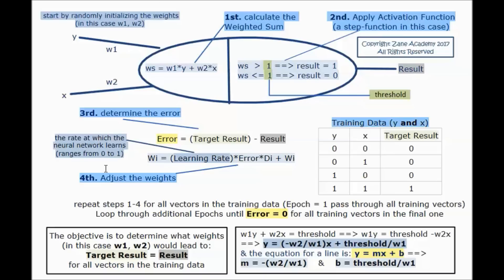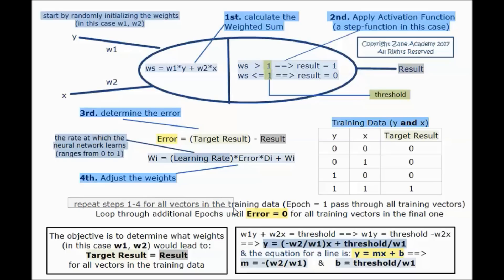Fourth, we adjust the weights: w1 = (learning rate * error * y) + original w1, and w2 = (learning rate * error * x) + original w2. We repeat steps 1 through 4 for all vectors in the training data — this constitutes one epoch. We loop through additional epochs until the error equals 0 for all training vectors in the final epoch.